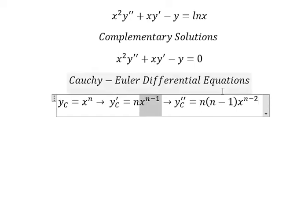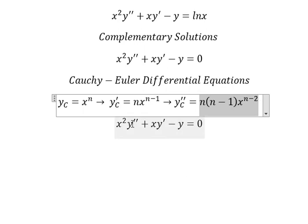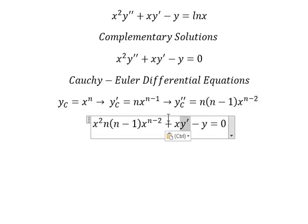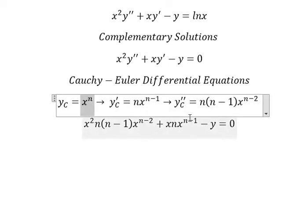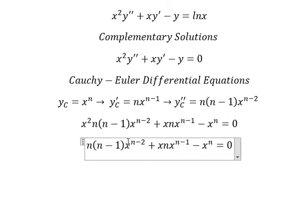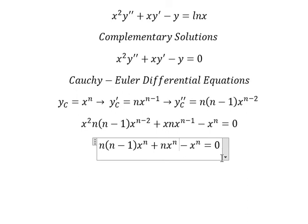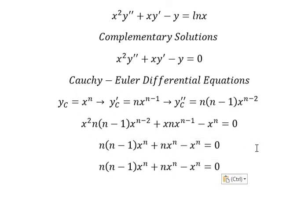Because when we take the first derivative we get n minus 1, and then n minus 1 minus 1 gives us n minus 2. So y double-prime is n(n-1)x^(n-2), y-prime is nx^(n-1), and y is x^n. We can now do factorization, factoring out x to the power of n.